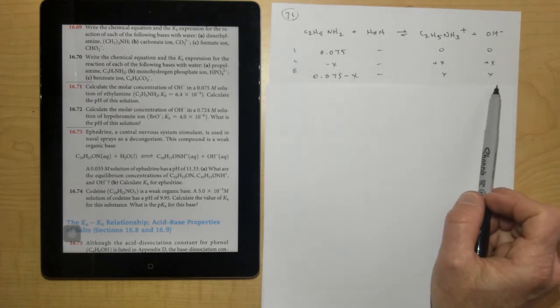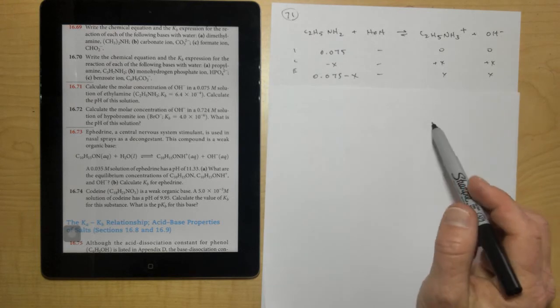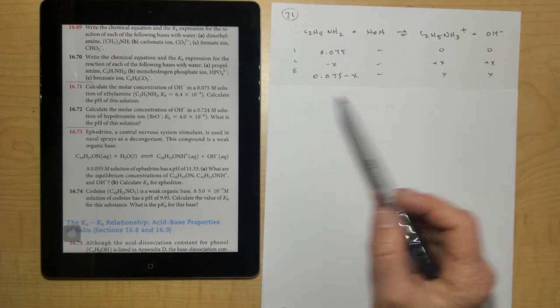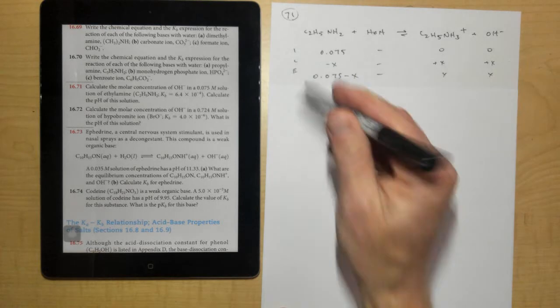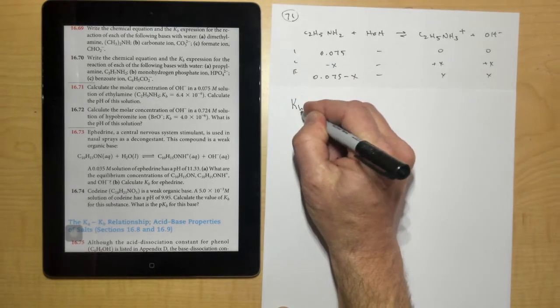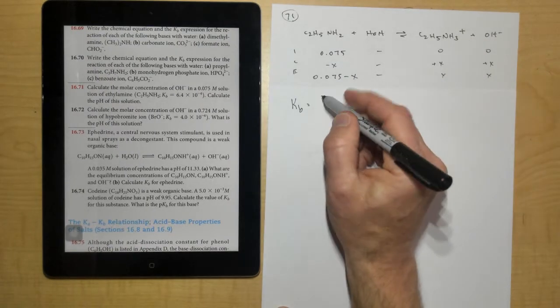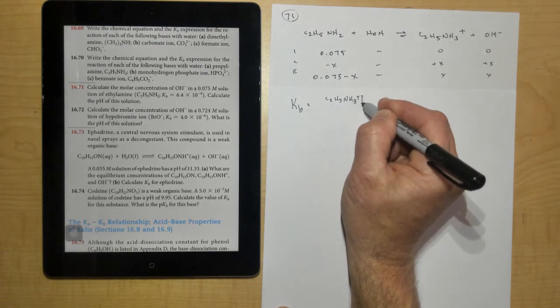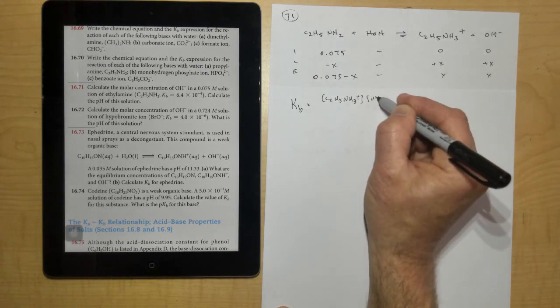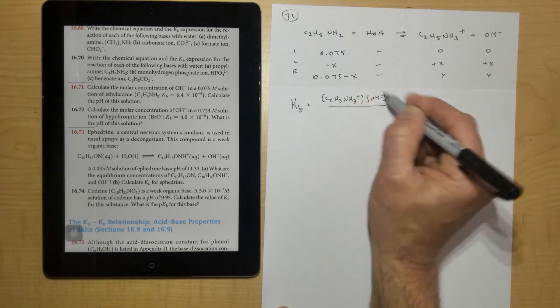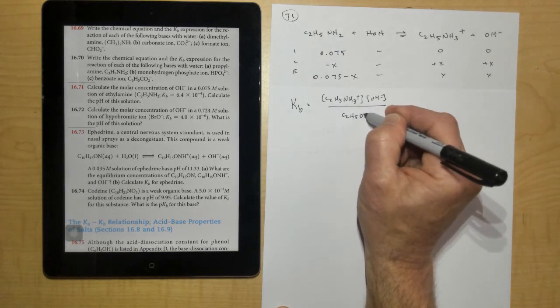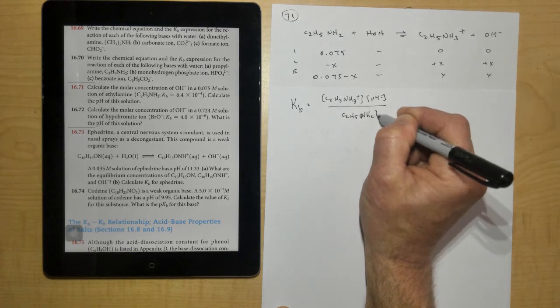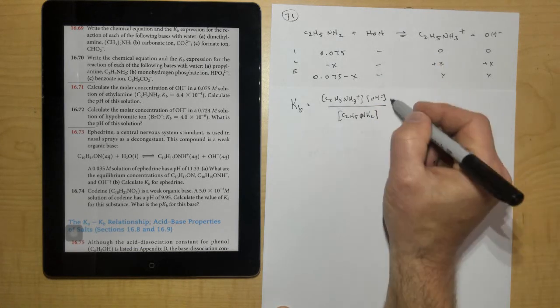Okay, then what we want to do is write the KB expression, because they tell us the KB right here. So KB is equal to the products, so C2H5NH3 plus times OH minus, divided by the reactants, C2H5NH2, don't put water in there, remember.